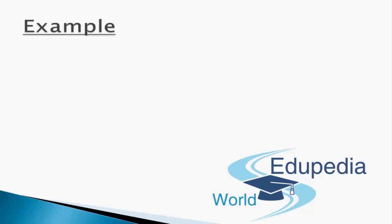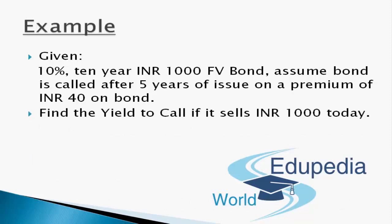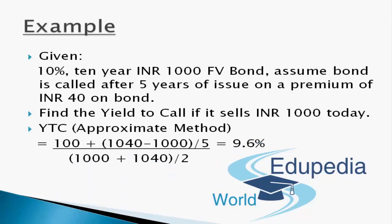Let's consider an example. Given a 10%, 10-year INR 1000 face value bond, assume the bond is called after 5 years of issue at a premium of Rs 40. We'll find the yield to call using the approximate method: [100 + (1040 − 1000)/5] / [(1000 + 1040)/2]. The YTC comes out to 9.6%. I hope you now have complete conceptual clarity regarding the topic of callable bonds.